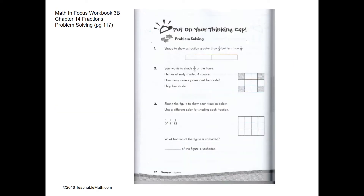Problem solving question one: shade a fraction that is greater than one fourth but less than one half. One half is here and one fourth is around here, so we need to shade a fraction that is more than one fourth but less than one half.